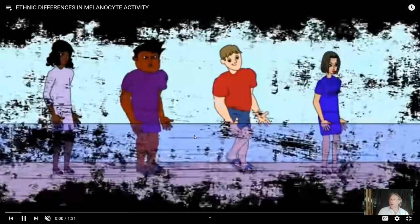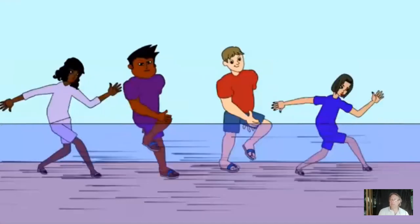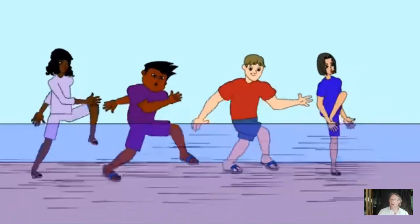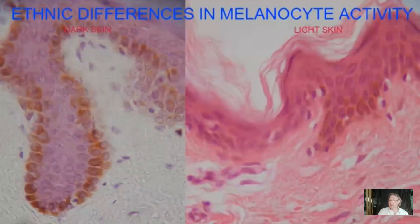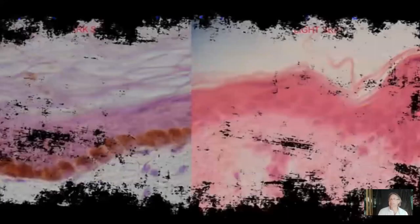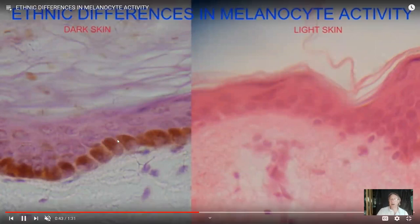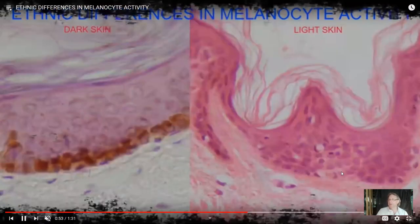Not only can one individual make more melanin upon exposure to the sun, but looking at different populations of humans in different parts of the world, we can observe variation in how much melanin is in the skin. Humans are not unique in this — different populations of chimpanzees and dogs also show differences in pigmentation. In some human populations, genes cause accumulation of greater amounts of melanin in the stratum basale, while in others much less so.